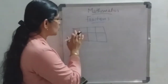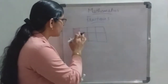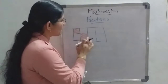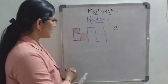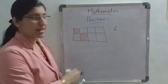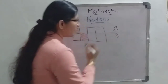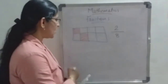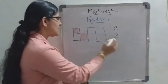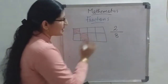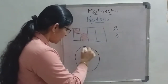So how can we say this in fraction form? The total number of equal parts is 8, and from those 8 parts, 2 parts were given to you. How many parts are shaded? 2. We write that 2 above the line, and the total number of equal parts — 8 — below the line. So the fraction is 2 by 8.